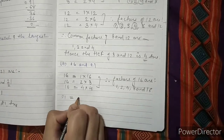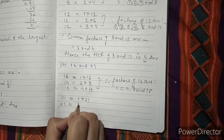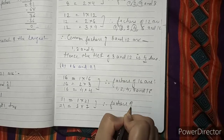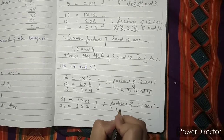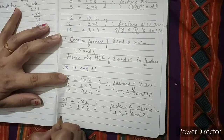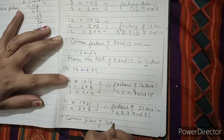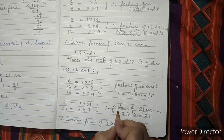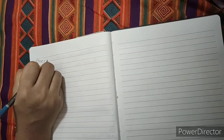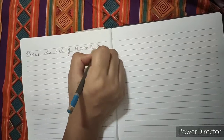The factors of 21: 21 is not divisible by 2, so we take 3: 3 sevens are 21. So the factors of 21 are 1, 3, 7 and 21. The common factors of 16 and 21 are only 1. Hence, the HCF of 16 and 21 is 1.